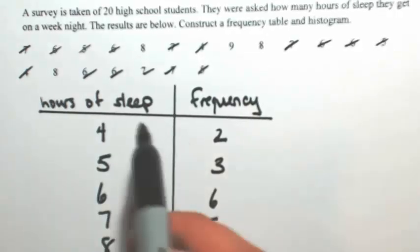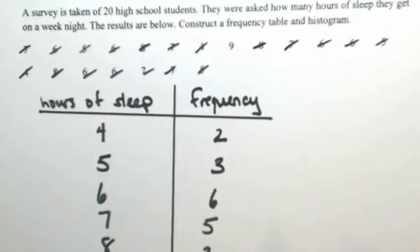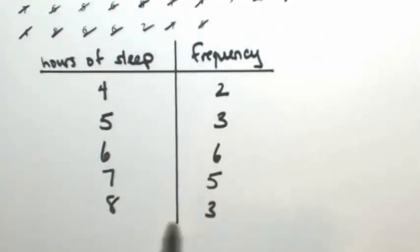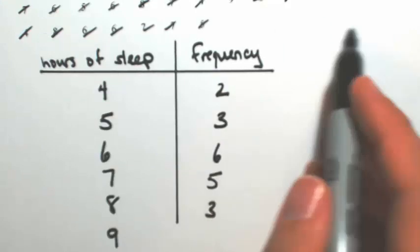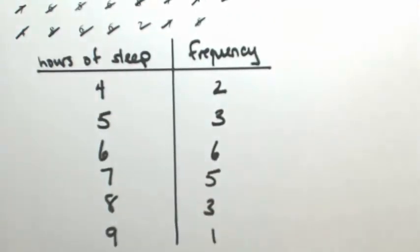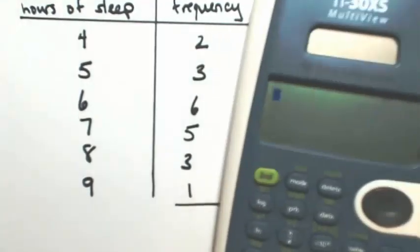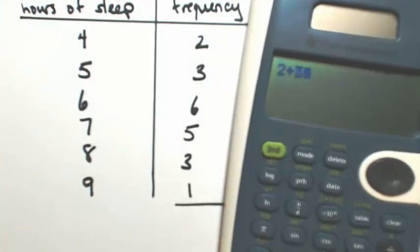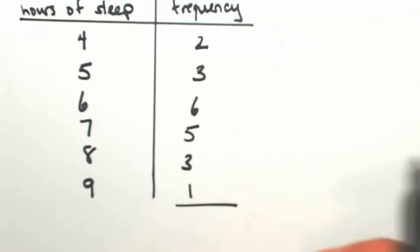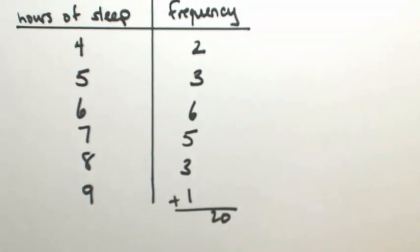Then 8 appeared 1, 2, 3 times. And there is a 9 — that lucky student — there's only one of those. To make sure I didn't miss anything, let me add up the frequencies — I need to get 20, which was the number of students surveyed. So 2 plus 3 plus 6 plus 5 plus 3 plus 1 is 20. So when I added all this up, I got everybody. This is your frequency table.